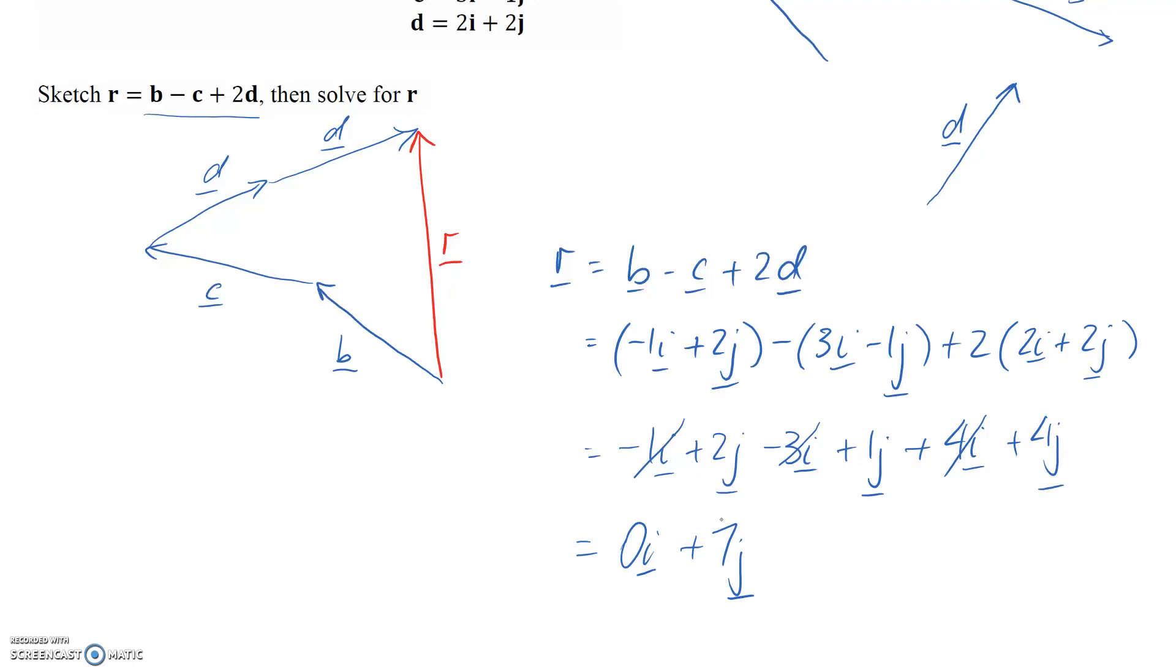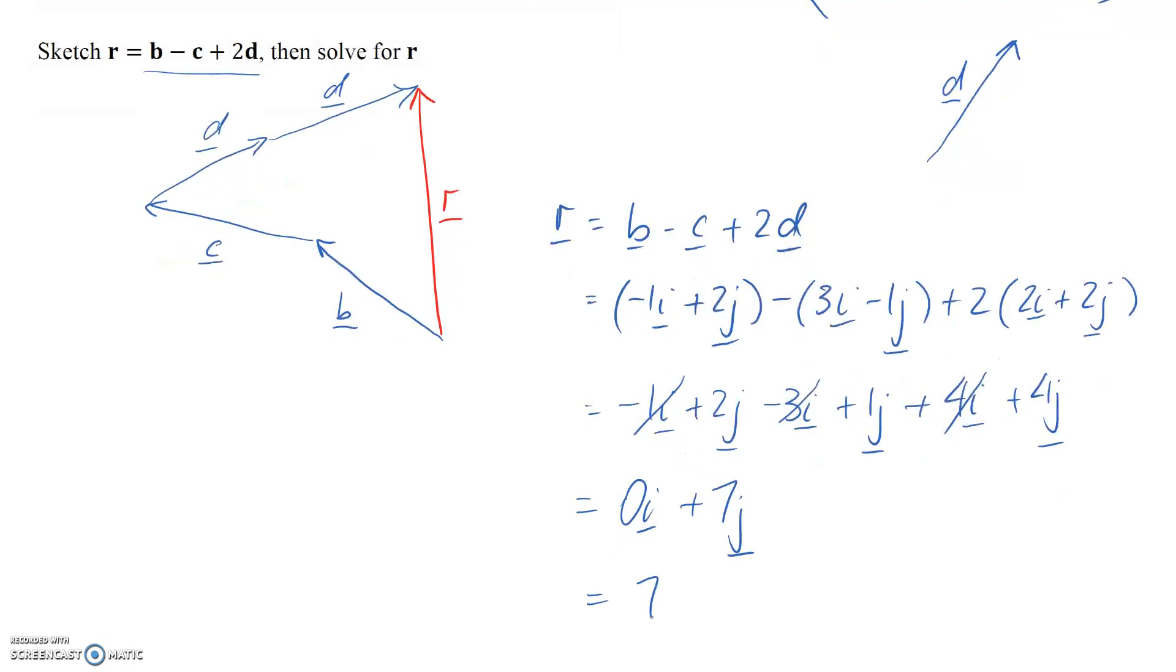So essentially our answer is just positive 7j. And if we look at our sketch, that's what we've pretty much got. Technically this should be a perfectly vertical line.